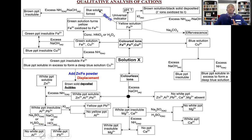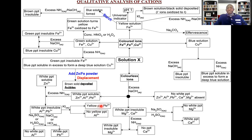An important point: say 'no white precipitate' — not 'a colorless solution is formed.' A common student mistake. You only talk about a solution being formed when you add distilled water. You can also differentiate lead and aluminium by adding potassium iodide: a yellow precipitate confirms lead ions present; no yellow precipitate indicates aluminium ions present.